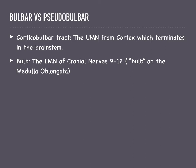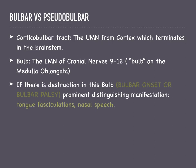The bulb is a structure on the medulla oblongata which contains the lower motor neurons of cranial nerves 9 to 12. If there is destruction in this bulb — the lower motor neurons of cranial nerves 9 to 12 — it is called a bulbar palsy, and if this is how the disease commences, it is called bulbar onset amyotrophic lateral sclerosis.